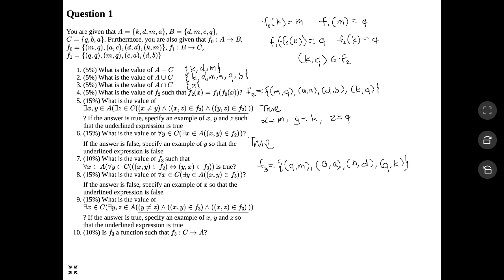We're done with seven — now we move on to number eight. It asks the same format as question six, except instead of asking about F2, we're asking about F3. What it's really asking is: does everything in C map to at least one thing in A? Looking at F3: does Q map to something in A? Q maps to M, and M is in A — good. Does B map to something in A? B maps to D, and D is in A — good. Does A map to something in A? Yes — AA is in F3. So for part eight, the answer is true.